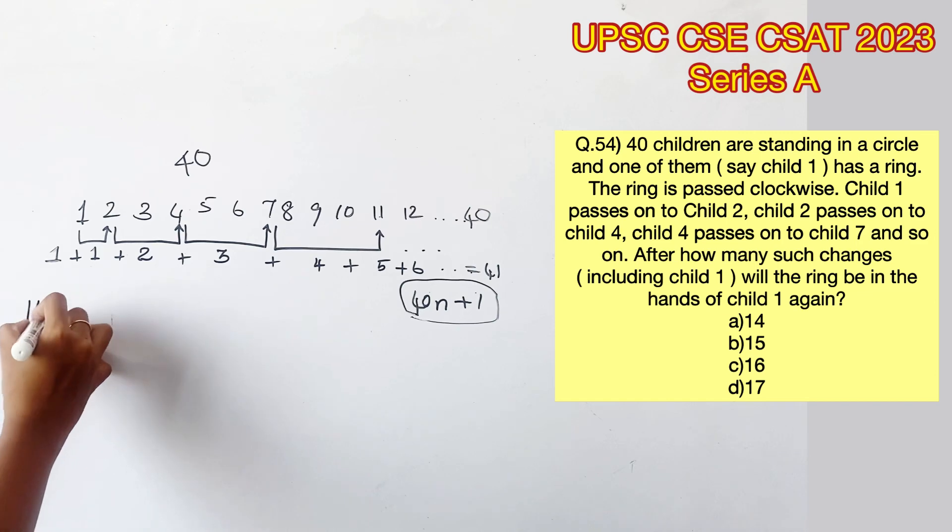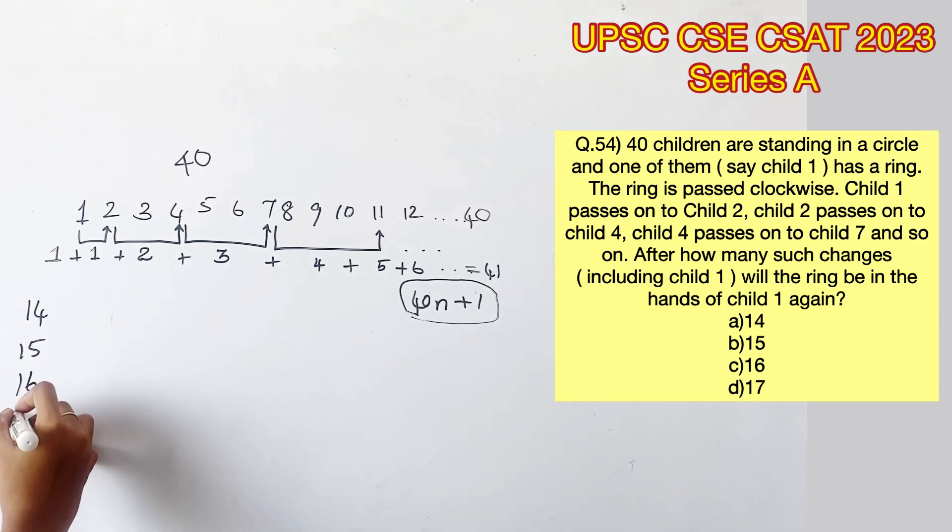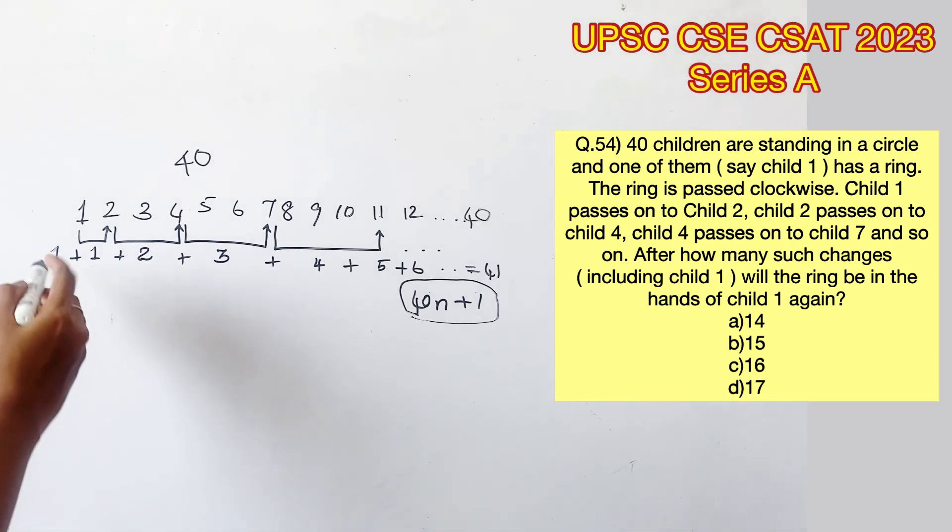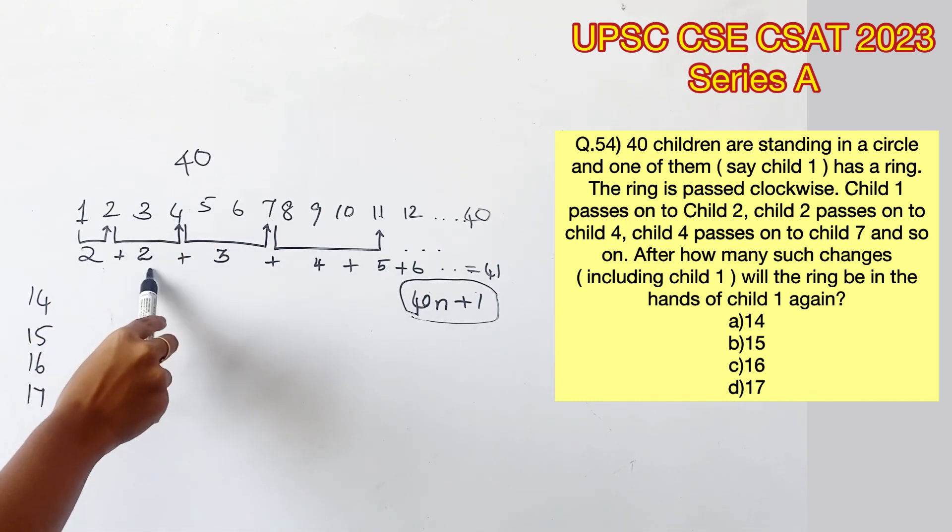If you check the options, the number of changes are 14, 15, 16, and 17. The first shift alone should be considered as 2, because we are trying to bring the sum and the position of the child with the ring to be equal.